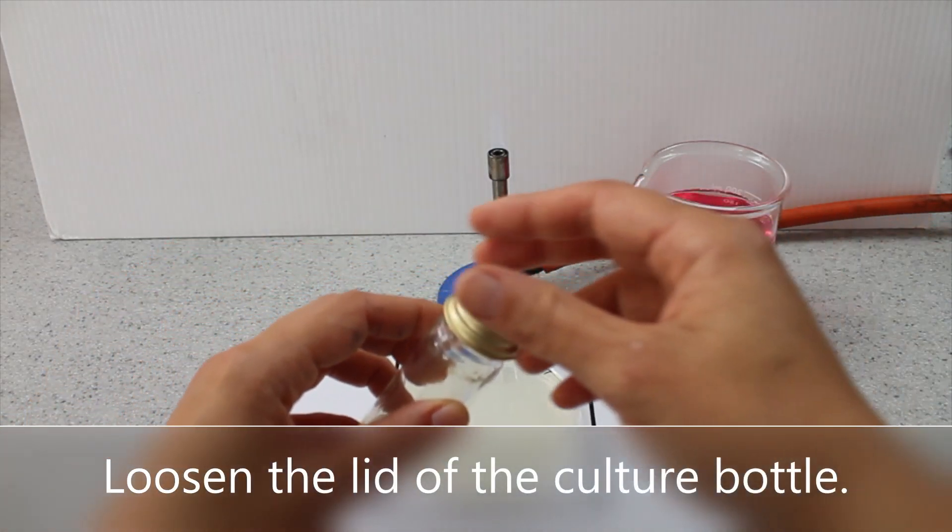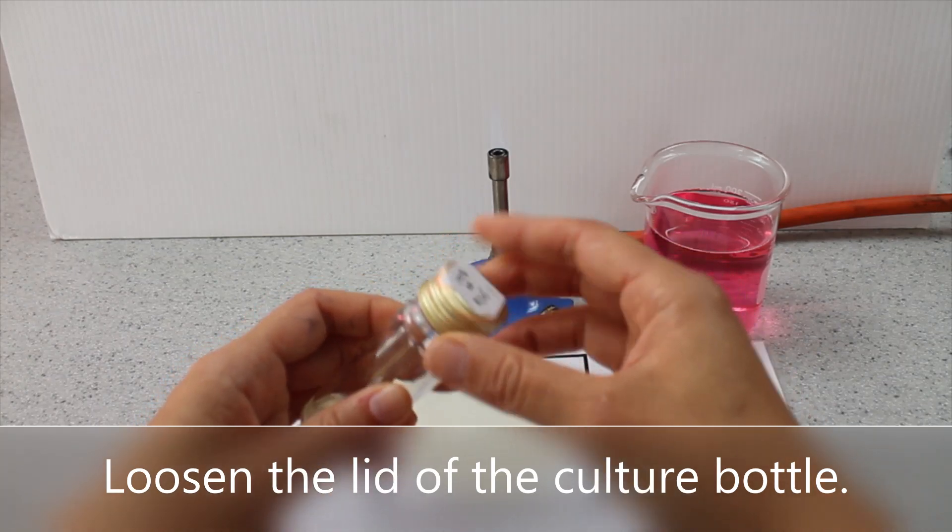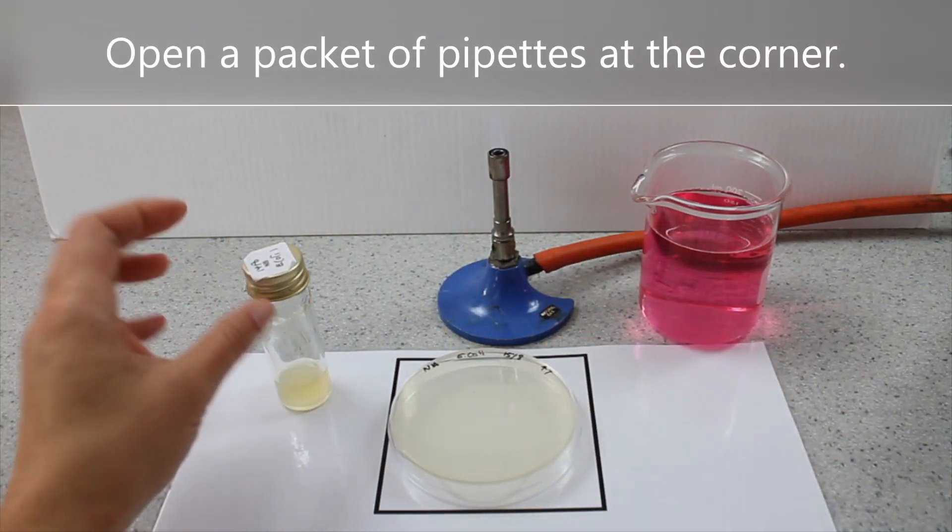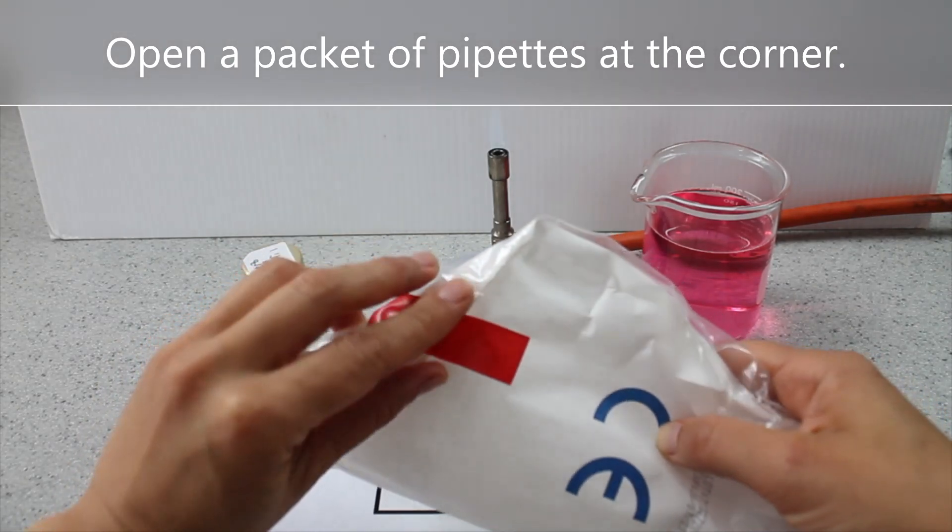Loosen the lid of the culture bottle. Open a packet of pipettes at the corner.